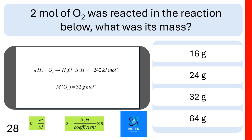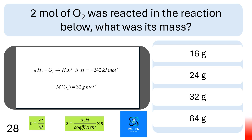Question twenty-eight: two moles of O₂ was reacted in the reaction below — what is its mass? Is it 16 grams, 24 grams, 32 grams, or 64 grams? The answer is 64 grams, because two moles of oxygen, or two moles of 32, was reacted.